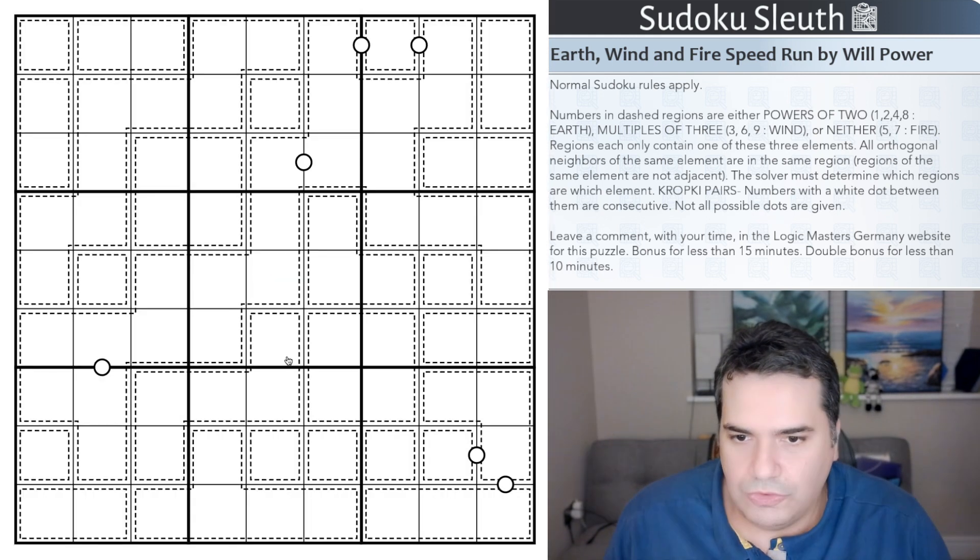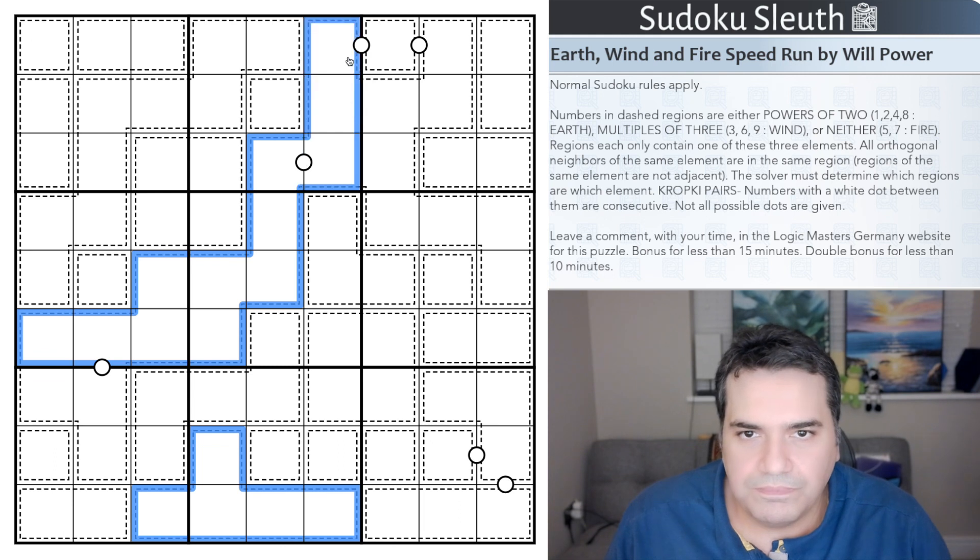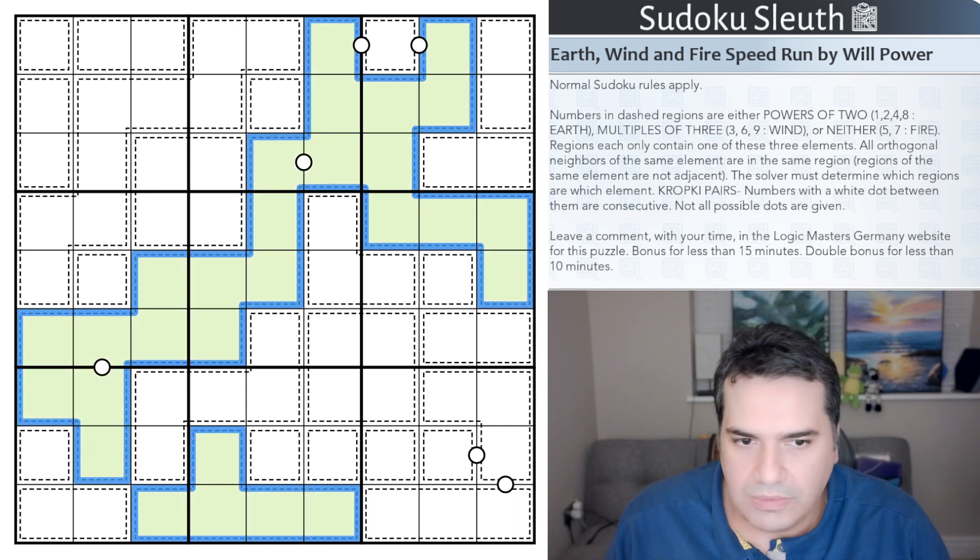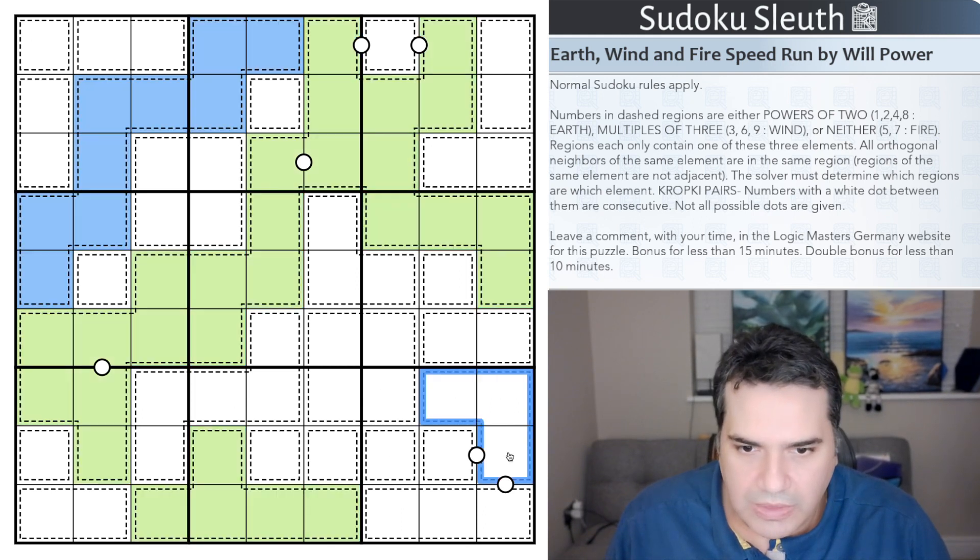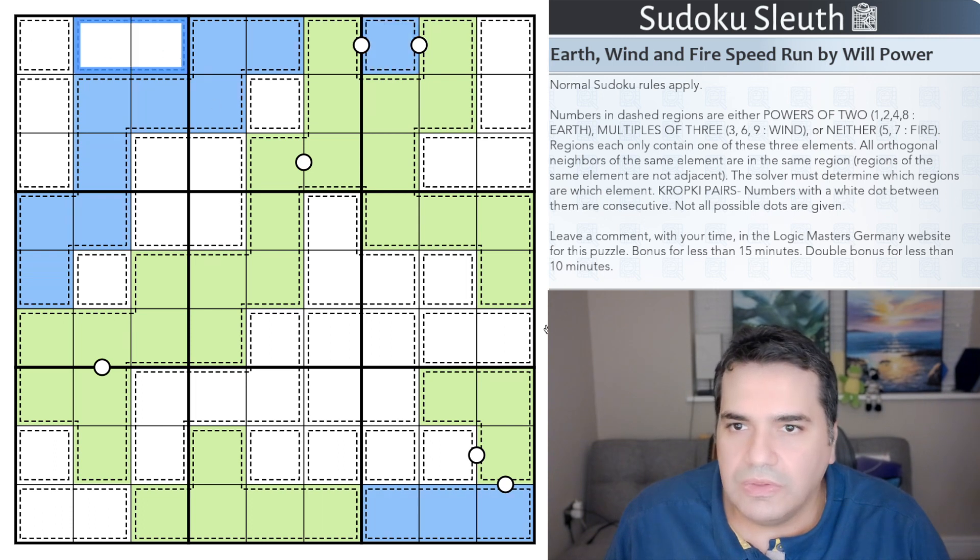Right, so cages that have four or more elements in them are clearly all going to be earth. Every box clearly has to have one. All of these have to be earth. I'm going to go with green. This is clearly air. These three have to be air. This has to be earth.